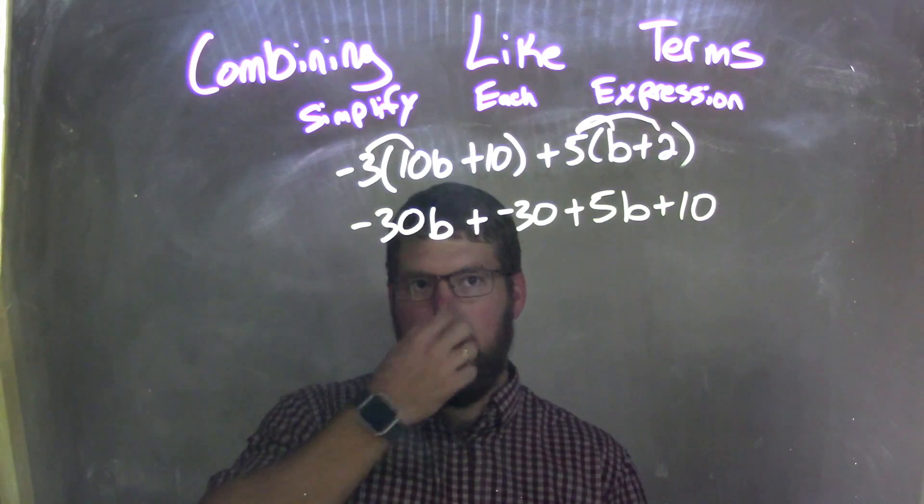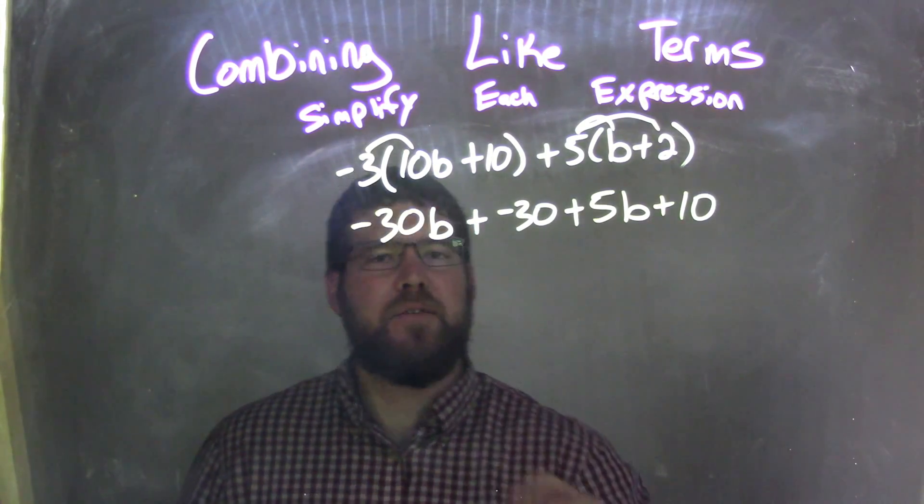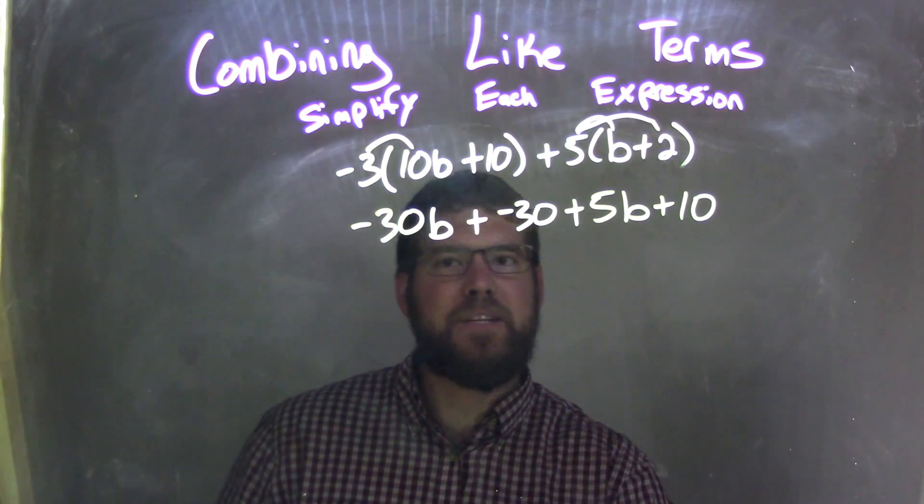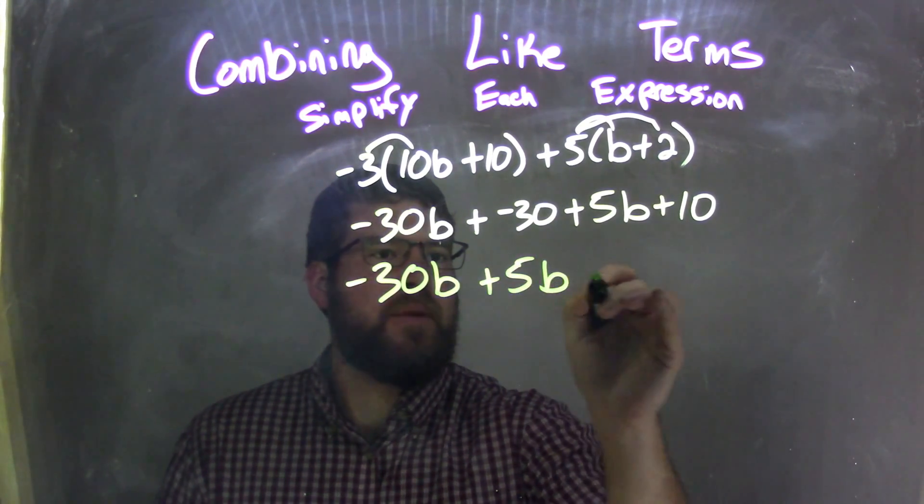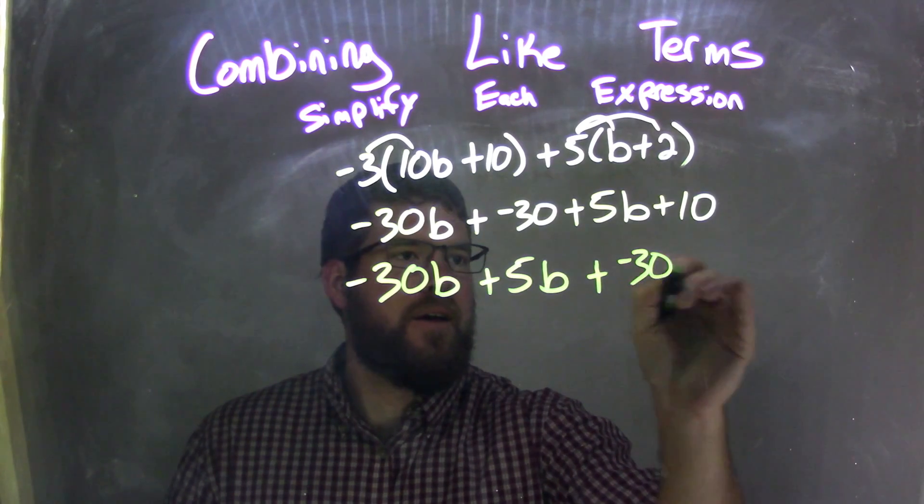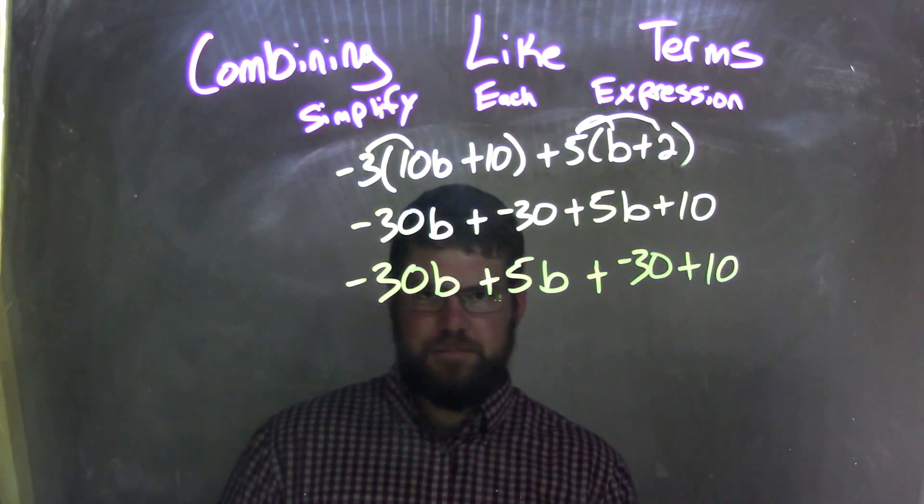So we have negative 30b plus negative 30 plus 5b plus 10. Let's rearrange the part of like terms next to each other. So negative 30b plus 5b plus negative 30 plus 10.